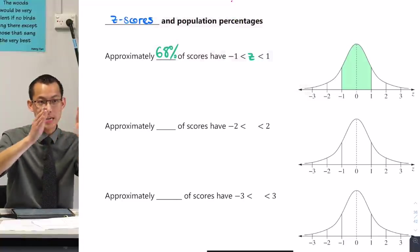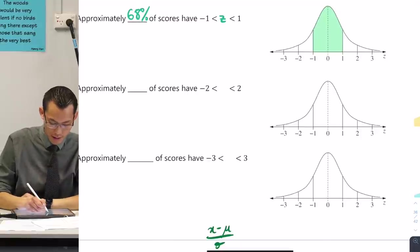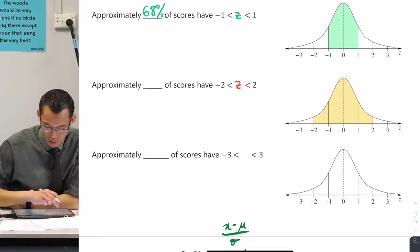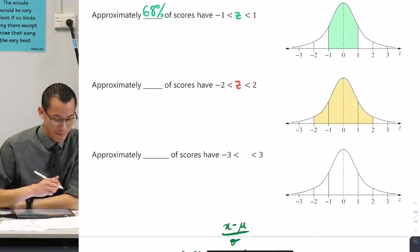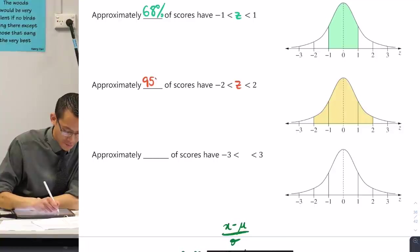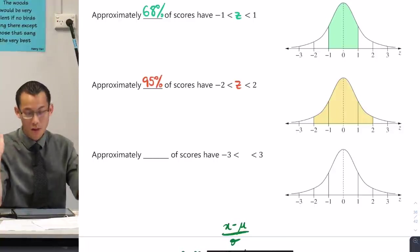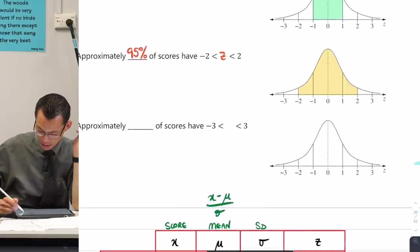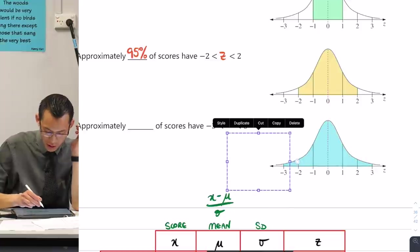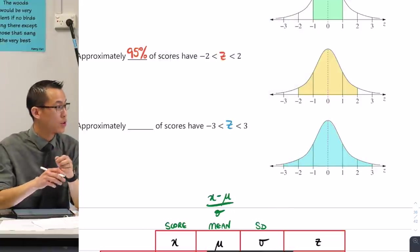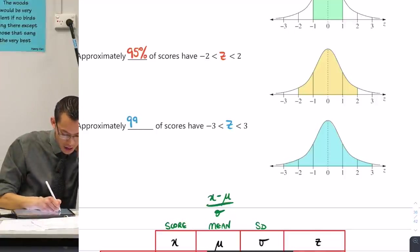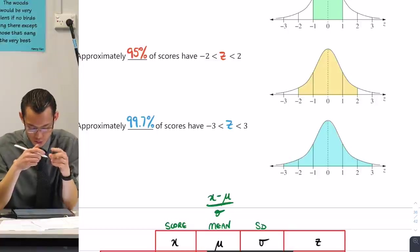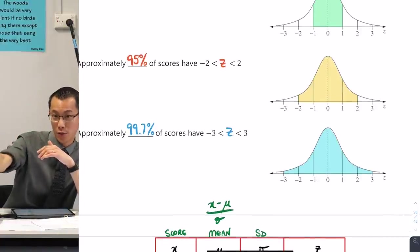Now, if you go one more standard deviation out, so if you go from negative 2 to 2, you can see you're now coloring in this larger section of the population. So when you have a look at that area under the curve, that's a lot more than 68%. Turns out it's about 95. So 95% of the population is within two standard deviations of the mean. Now, if you go one more out, and you can go further, obviously, but this is as far as we tend to go.